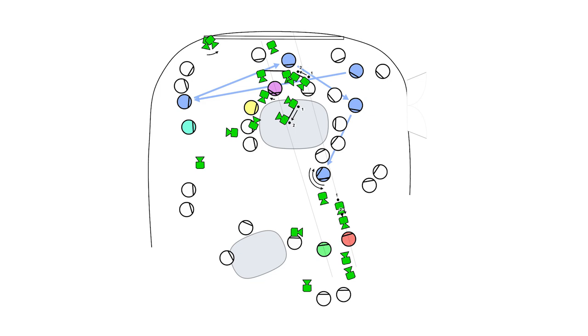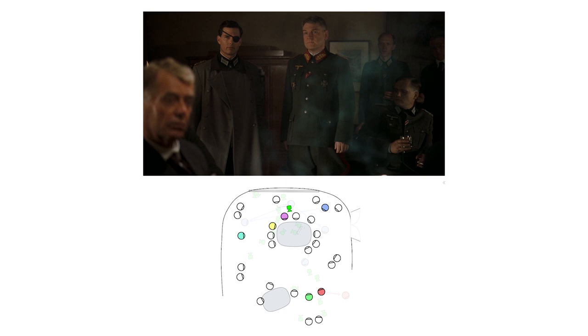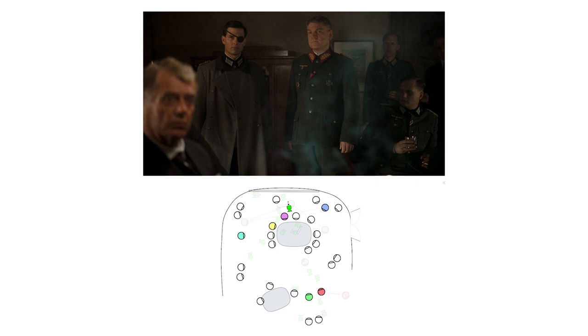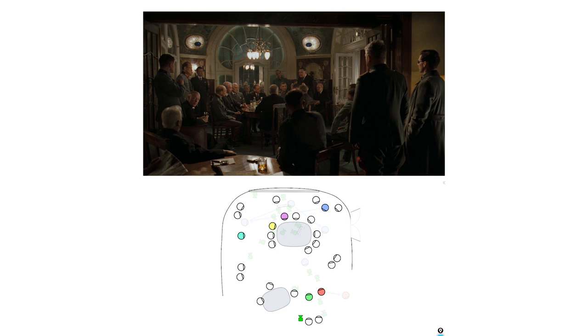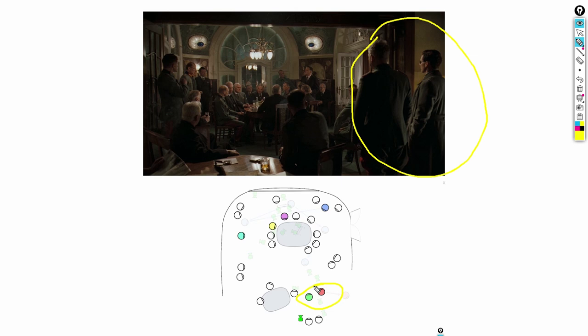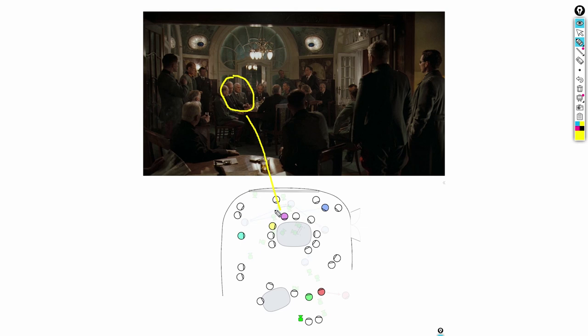We open the scene with a dolly move from over the shoulder of a gentleman sitting behind the main table, showing Tom Cruise and another guy entering the room. Then we cut to the master shot of the whole room, where we can clearly see the scene's geography — Tom Cruise and his friend in the foreground frame right. This gentleman conveys most of the lines, a couple of gentlemen behind the table throw in some lines, and General Albrecht on the left has mostly reaction shots.